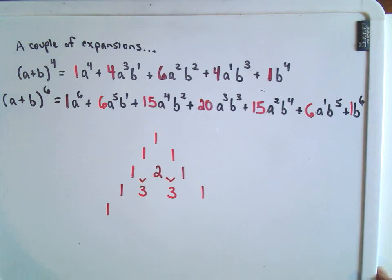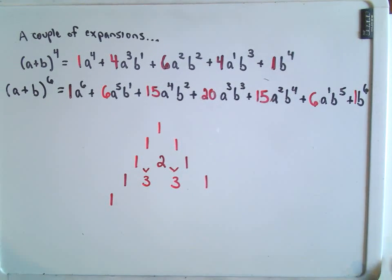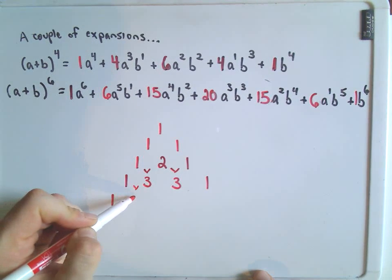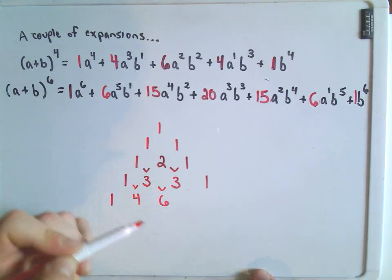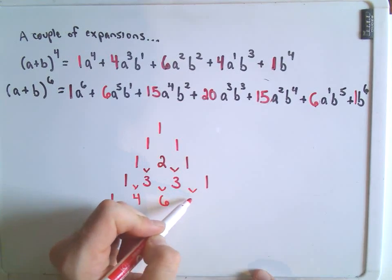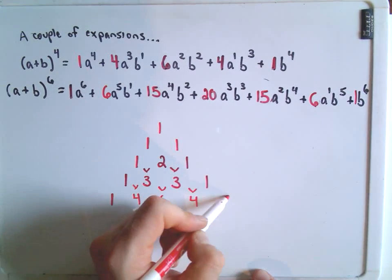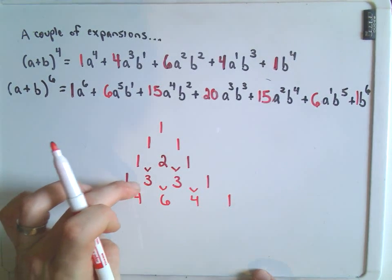Okay, so let me do this again. So if we add 1 and 3, we're going to get 4. If we add 3 and 3, we're going to get 6. If we add 3 and 1, we're going to get 4 again. And then we just stick another 1 at the end.